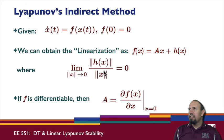So we have this. The limit as x goes to 0 of h of x over x in norm is equal to 0. So we've seen that if f is differentiable, then we can always get this.